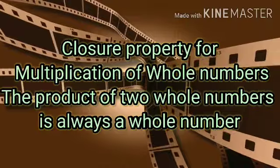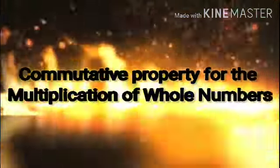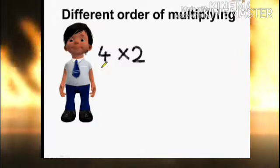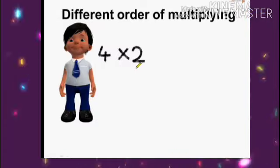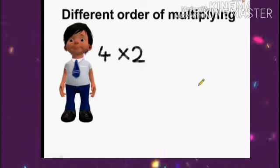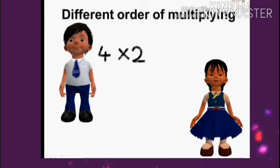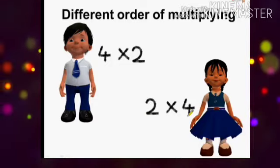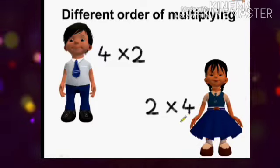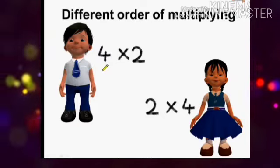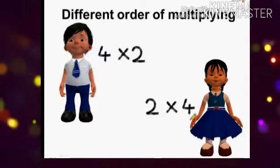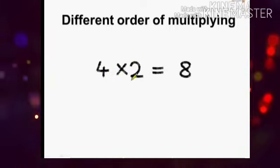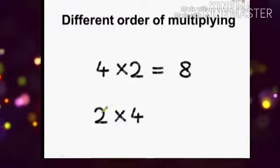Now we will check whether the commutative property also holds for multiplication. Suppose Raman finds the product of 4 and 2: 4 into 2 is equal to 8. And Rita finds the product as 2 into 4: 2 into 4 is also equal to 8. Whether we multiply 4 by 2 or 2 by 4, the result remains the same.